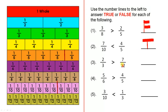2 thirds is greater than 7 twelfths. Let's look at where 2 thirds are — there, that's 2 thirds. Let's look at where 7 twelfths are — 1, 2, 3, 4, 5, 6, 7. So it says that 2 thirds are greater than 7 twelfths. There's 2 thirds, and there is 7 twelfths — so that is true.